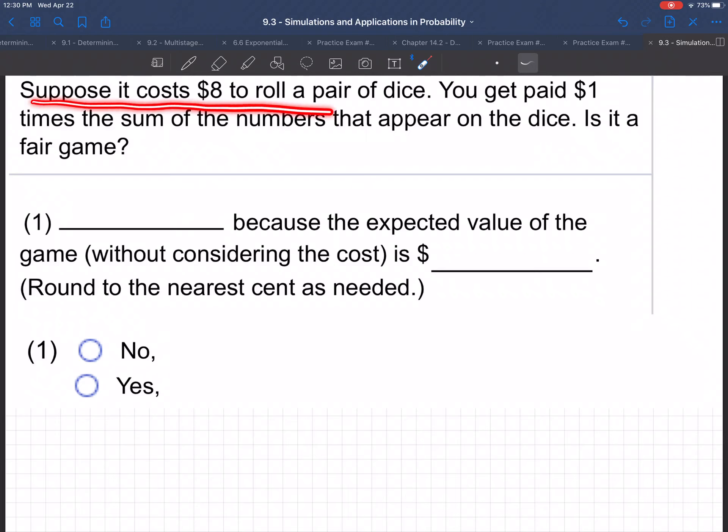Suppose it costs $8 to roll a pair of dice. You get paid $1 times the sum of the numbers that appear on the dice. Is it a fair game?